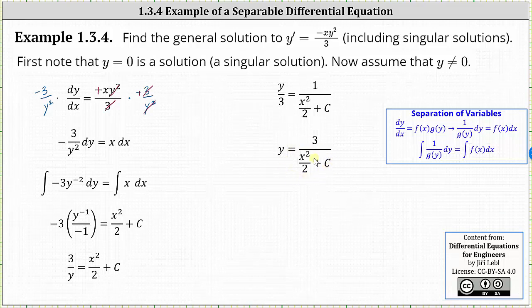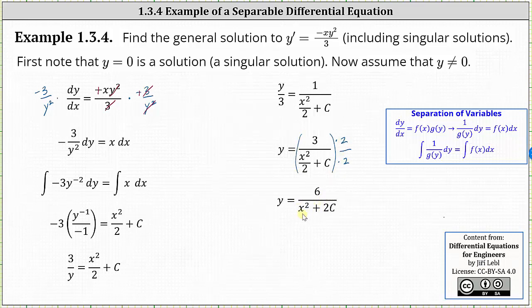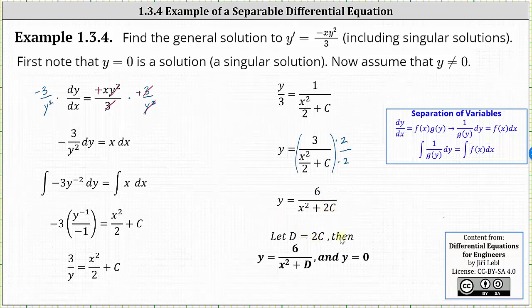We could leave the equation in this form, but let's clear the fraction from the denominator of the complex fraction by multiplying the numerator and denominator by two, which gives us y equals six divided by the quantity x squared plus two c. But two c is just a constant, so let's let d equal two c and write the general solution as y equals six divided by the quantity x squared plus d, where d is some constant. And again, we also have the singular solution of y equals zero. I hope you found this helpful.